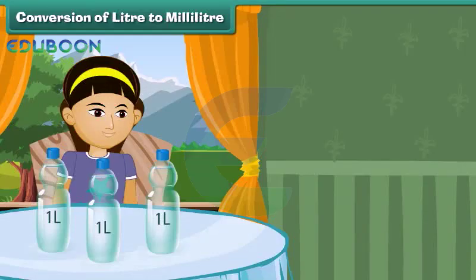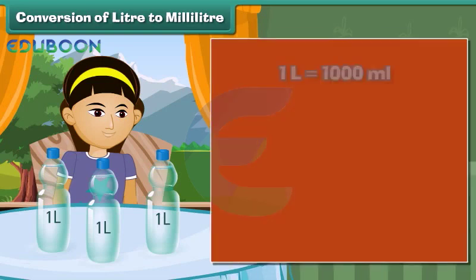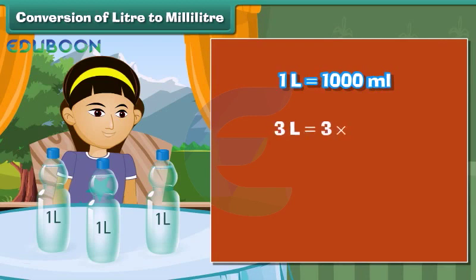Conversion of liters to milliliters. Sonam drinks 3 liters of water in a day. What is Sonam's water intake in milliliters? 1 liter is equal to 1000 milliliters. Therefore, 3 liters is equal to 3 into 1000 milliliters, which equals 3000 milliliters. So, Sonam drinks 3000 milliliters of water in a day.